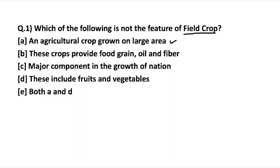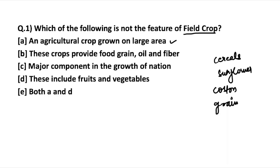Next: 'these crops provide food, grain, oil, and fiber.' Again, a correct statement because the basic agenda of an agricultural crop is to provide food, grain, oil, and fiber. Examples of such crops include cereals, sunflower, and cotton — all categorized as field crops. The next statement is also correct.